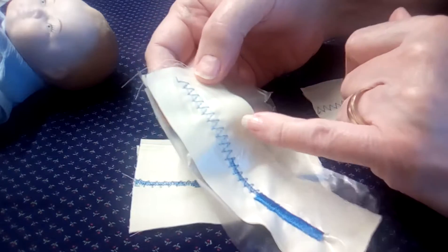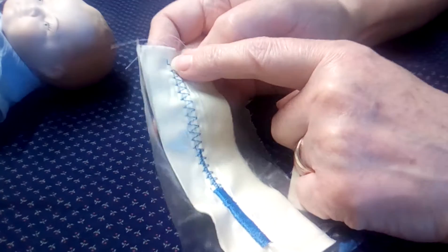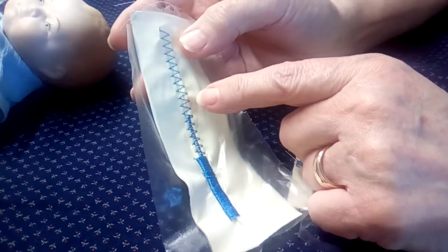So I'm going with a width of seven, which is the largest my machine will do. So I sew it down all the way to the bottom and then